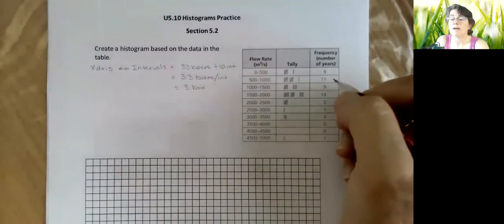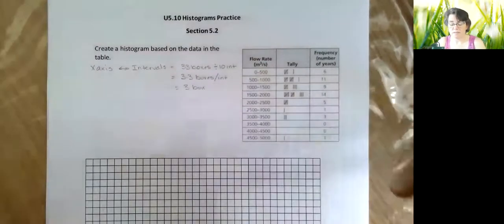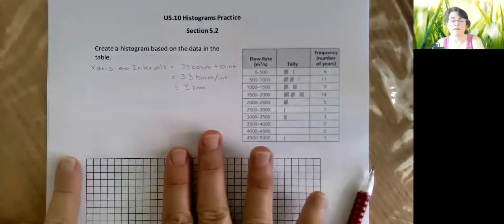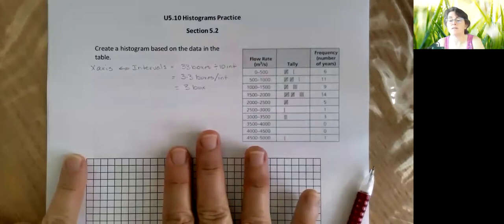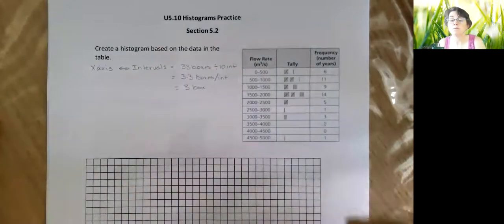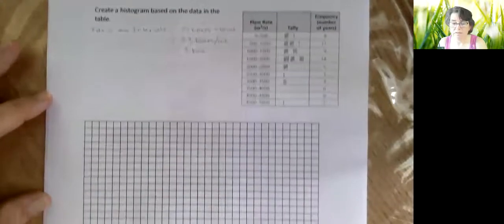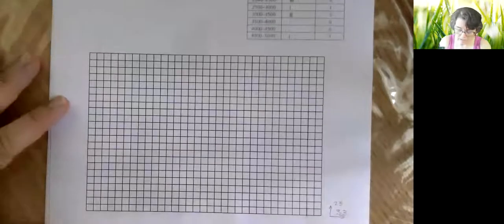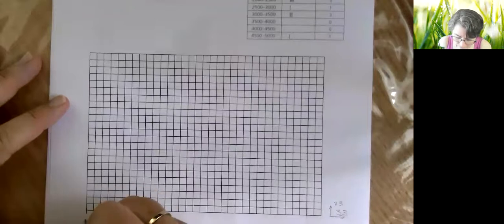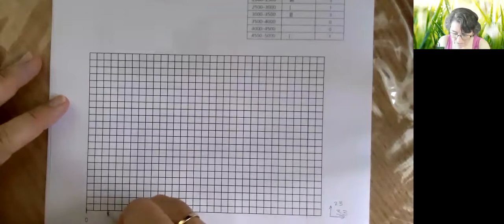So basically from 0 to 500 is three boxes, from 500 to 1000 is three boxes. If you wanted to do every two boxes, fine, but I would suggest don't use every one because then you're gonna have this really skinny little graph and it makes it really hard for me to read. All right, so my graph starts at 0 and then I'm going to count over 3.